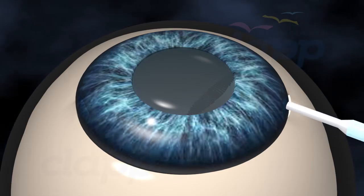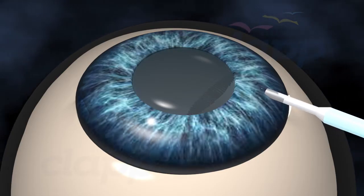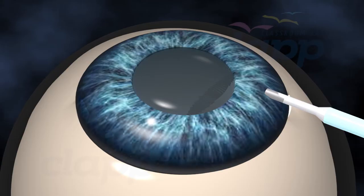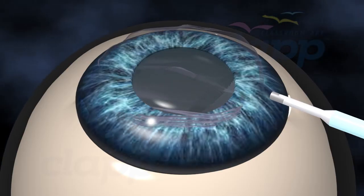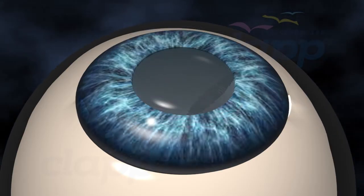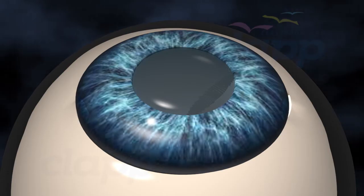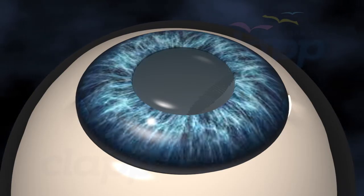Next, the surgeon applies a jelly-like transparent substance called OVD inside the anterior chamber. This will protect the interior structures of the eye during surgery.